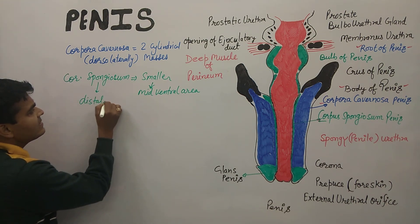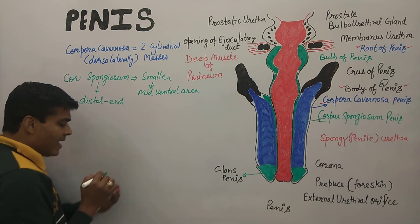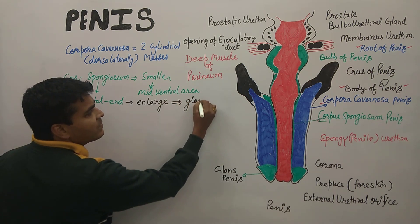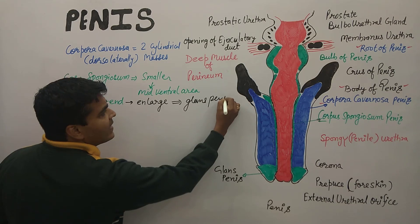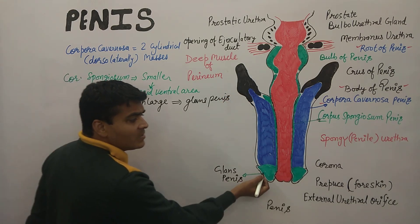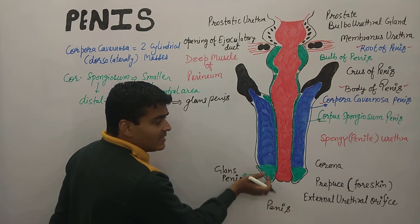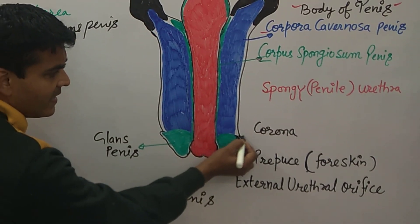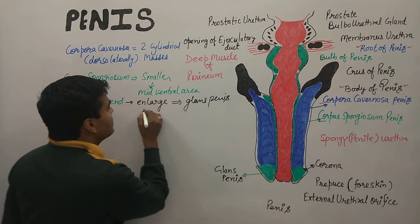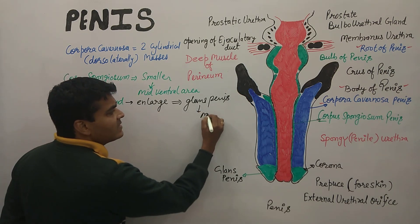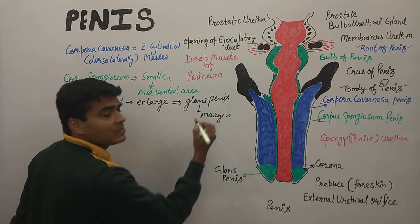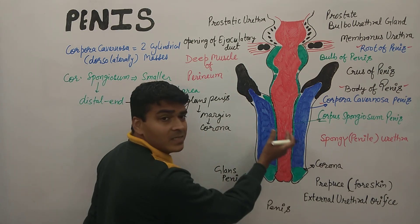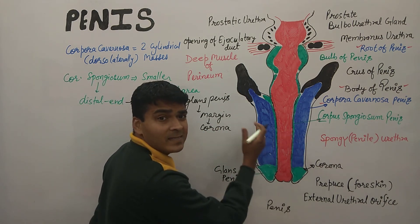At the distal end, the corpus spongiosum enlarges to form the glans penis. The marginal area of the glans penis is known as the corona. The region surrounding and covered by the corpus spongiosum is known as the spongy penile urethra.